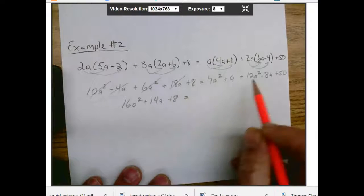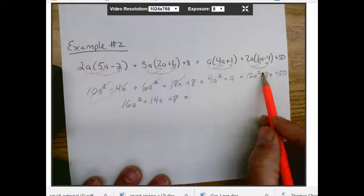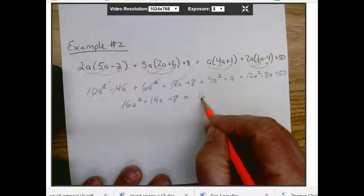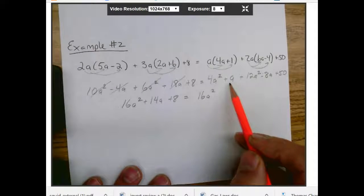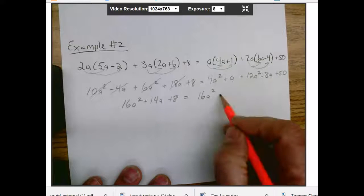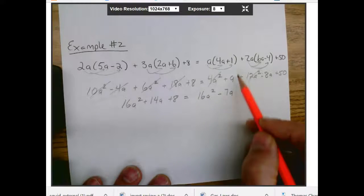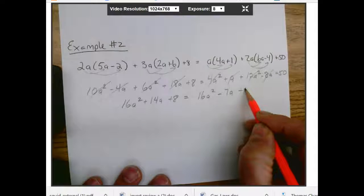Then we have on the other side, we have 4a squared and we have 12a squared. That's going to give us 16a squared. And here we're going to have an a and then minus 8a. That's going to give us a minus 7a. And then we get that, that, that, and that. That's going to be plus 50.